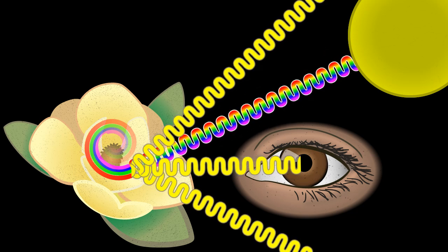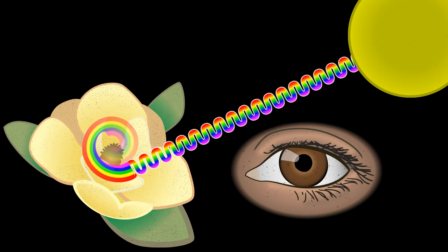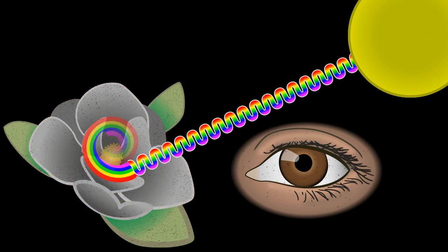If all of the light is absorbed by the flower, then none of the light enters our eye. This absence of light gives the flower a black appearance.